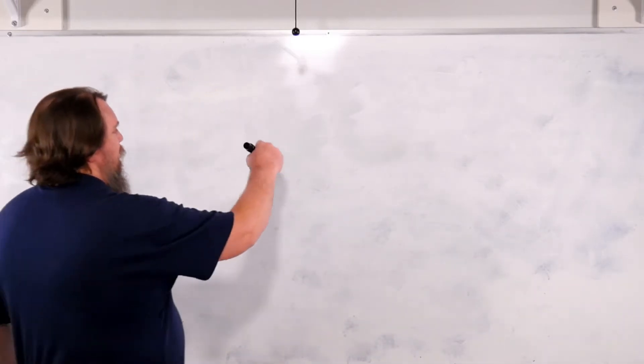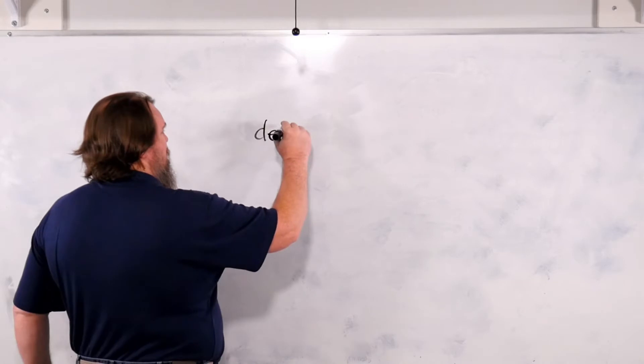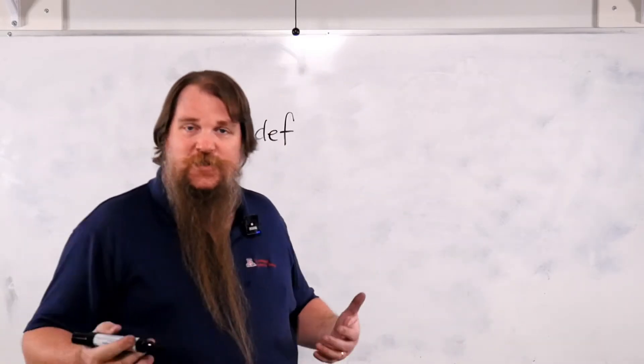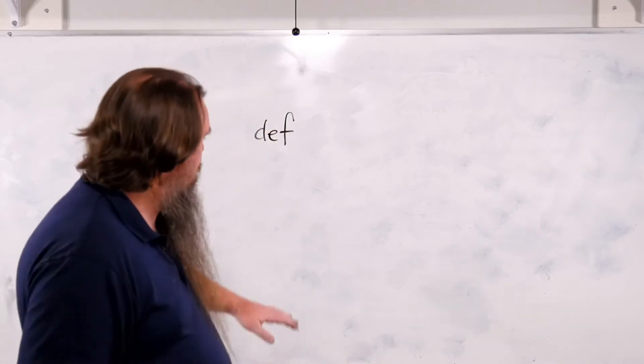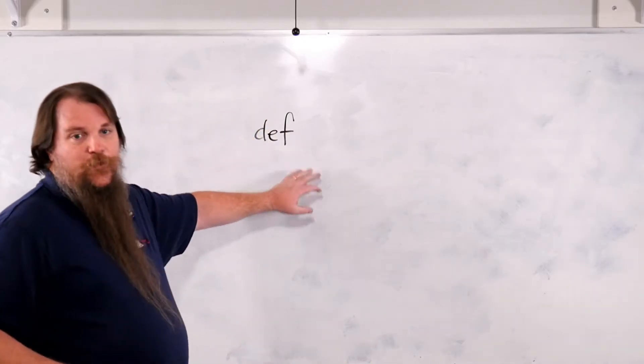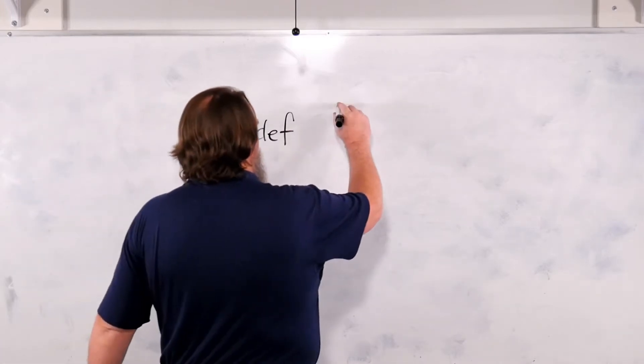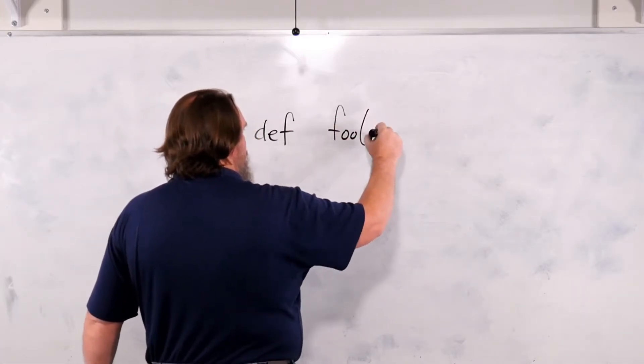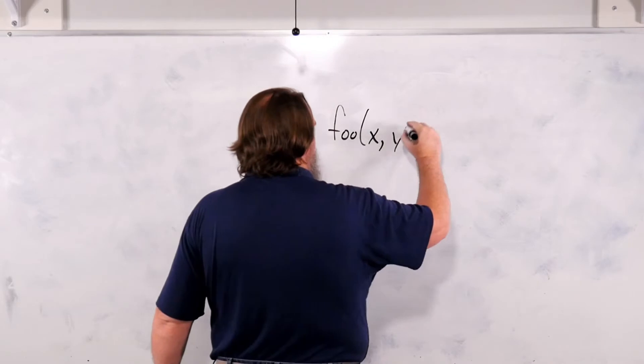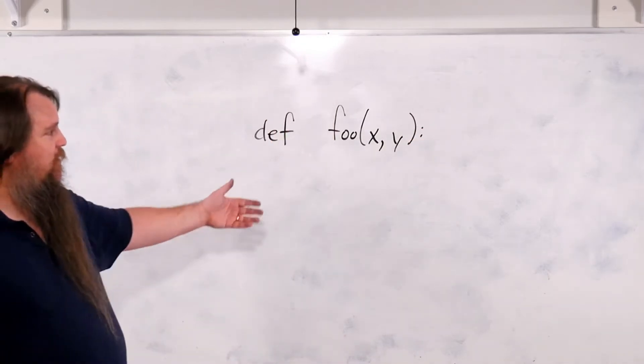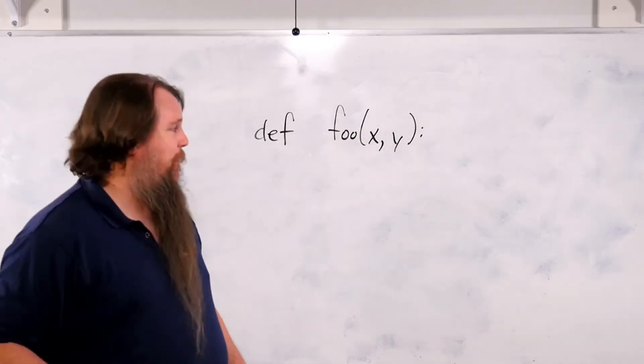Python functions are declared with the def keyword. Now in Python, just like variables don't declare their types, the same is true with return types and parameters in Python. So let's create a function foo. It's going to have parameters x and y. So whoever calls foo needs to pass exactly two parameters.